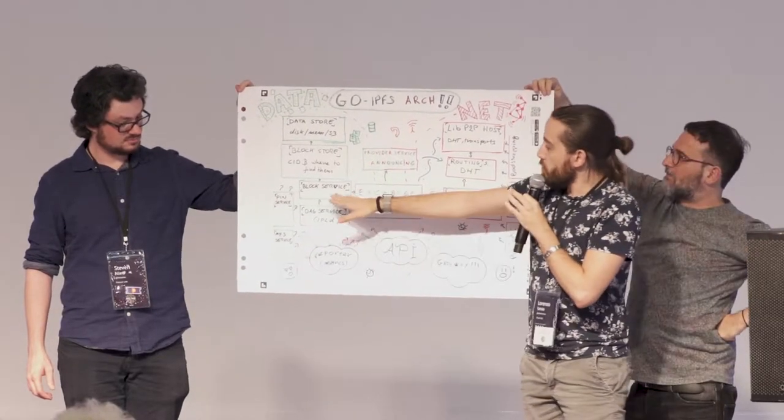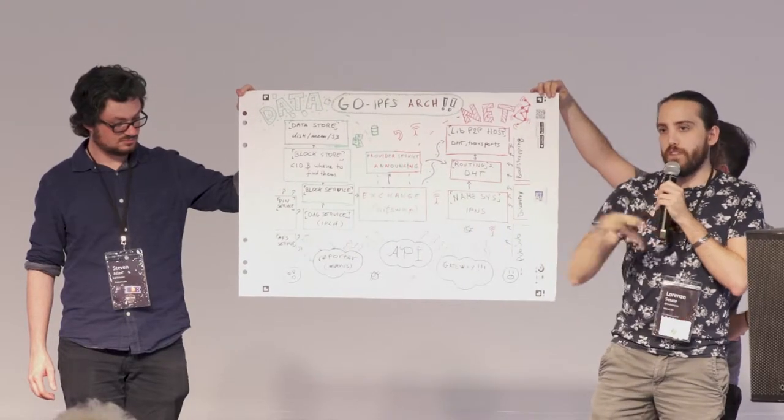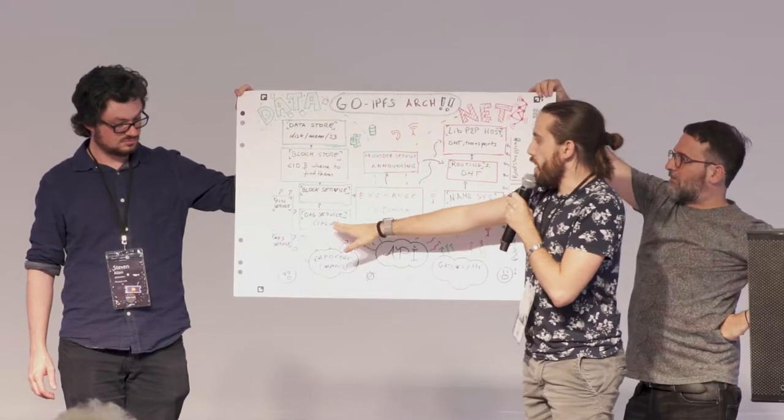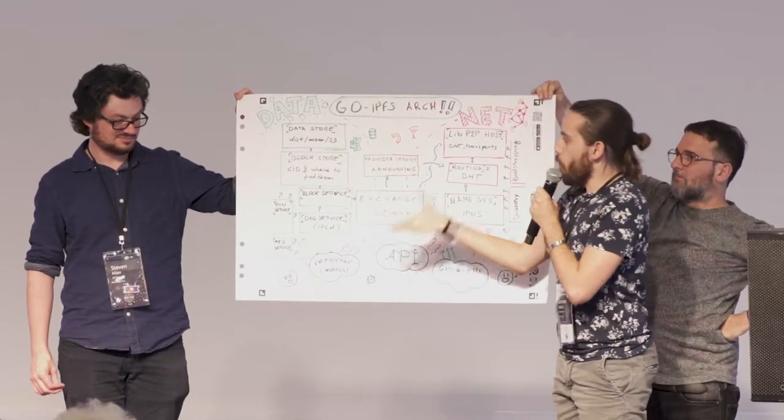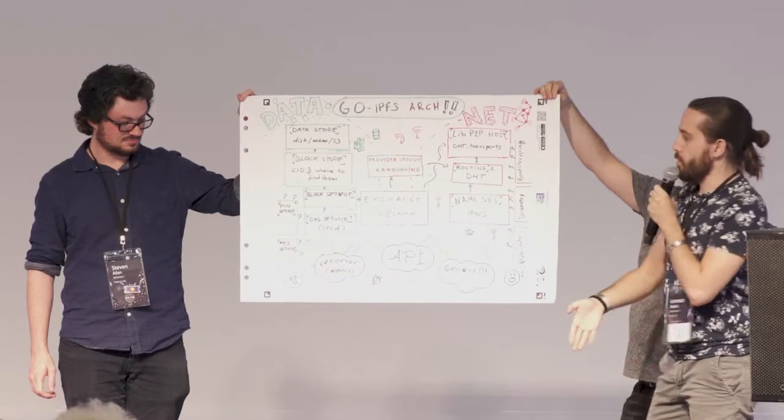We have the block service, which tries to understand what the raw data is. Then we have the DAG service, which understands what this block of stuff is, which is IPLD basically.